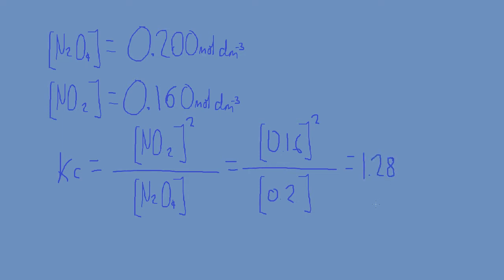We can work out the units of Kc by cancelling out the repeated moles per decimetre cubed on the top and on the bottom, so we're left with 1.28 moles per decimetre cubed.